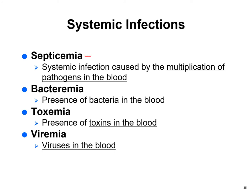Septicemia is multiplication of bacteria in the bloodstream. Bacteremia is bacteria present in the bloodstream — bacteremia may come first, then septicemia. Toxemia means toxins are in the bloodstream. Botulism toxin: if someone keeps you alive on a ventilator until it wears off, no real harm is done. Tetanus toxin may require an induced coma due to seizures, but with a ventilator you can survive. Viremia means viruses are in the bloodstream.